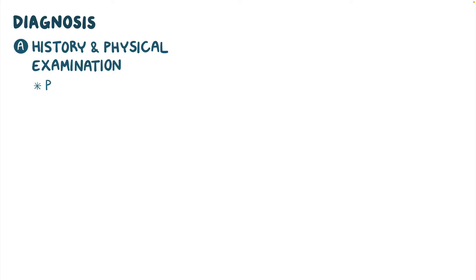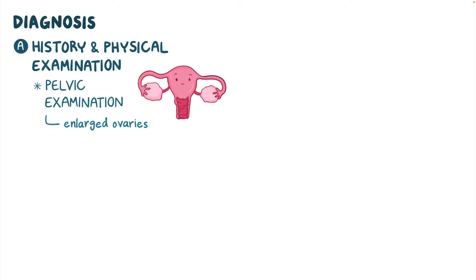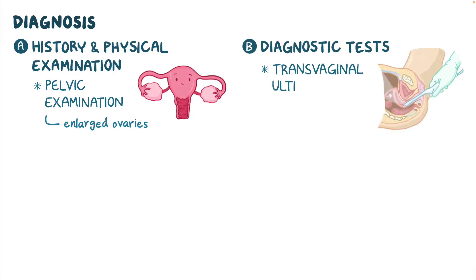Diagnosis of ovarian cancer starts with a history and physical examination, which includes a bimanual pelvic examination and may show signs of enlarged ovaries. Additional diagnostic tests like a transvaginal ultrasound to visualize the cancer, or a CT, MRI, or PET scan may also be done to assess for metastases.